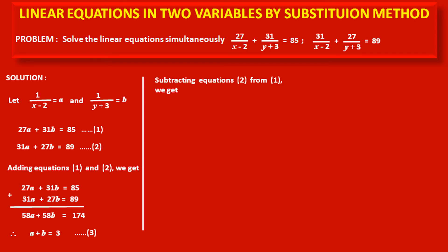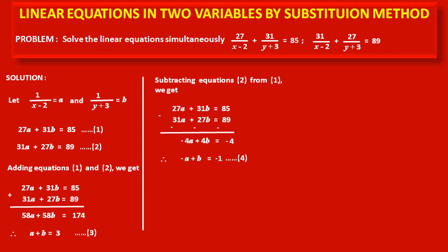Now, subtracting equation 2 from equation 1: (27a + 31b = 85) minus (31a + 27b = 89). Each term of the second equation changes sign. We get 27a - 31a = -4a, and 31b - 27b = 4b, equal to 85 - 89 = -4. Dividing both sides by 4, we get -a + b = -1. Consider this as equation number 4.